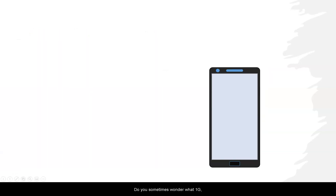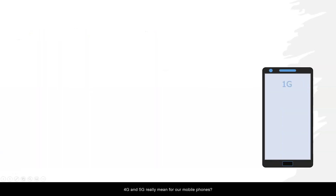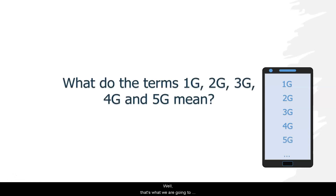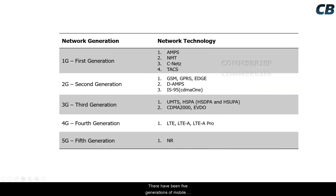Do you sometimes wonder what 1G, 2G, 3G, 4G, and 5G really mean for mobile phones? Well, that's what we're going to cover in this video. There have been five generations of mobile networks: 1G stands for the first generation, 2G stands for the second generation, and so on.